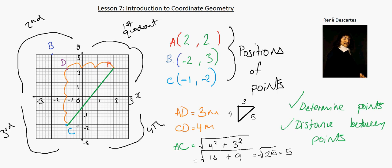We could go from B to C - so we went 1 across and then 5 up: one, two, three, four, five. B to C would be the square root of 1 squared plus 5 squared, which would be root 26. We could simplify that as a surd - that may be the final simplified form.